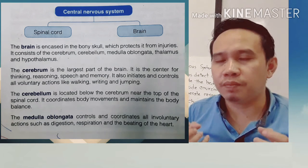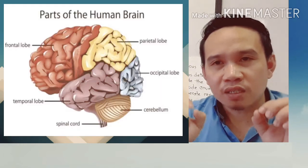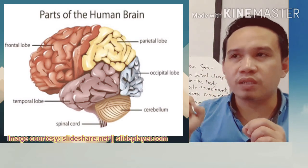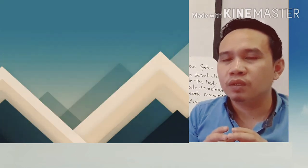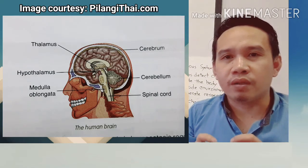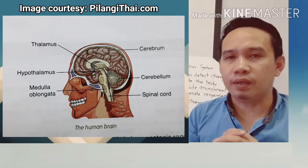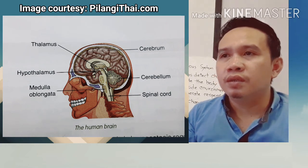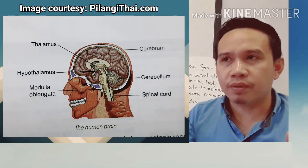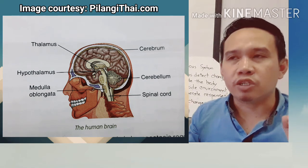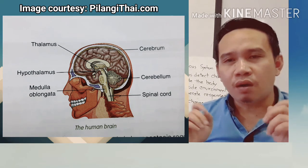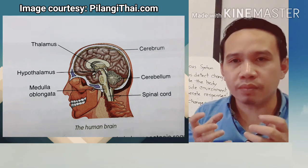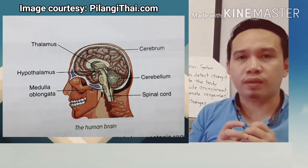Now let's focus on the important parts of the human brain. Our human brain is composed of different parts: the thalamus, hypothalamus, medulla oblongata, cerebrum, cerebellum, and the spinal cord. All of these parts are very important because they help the human brain perform very well.